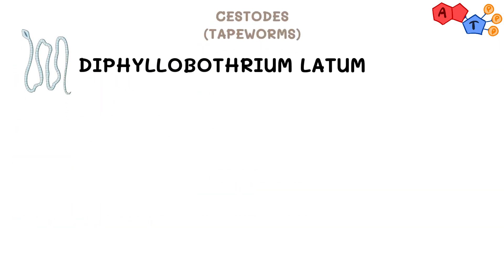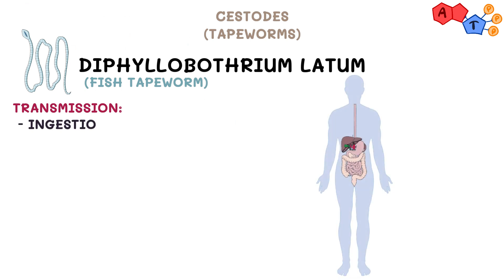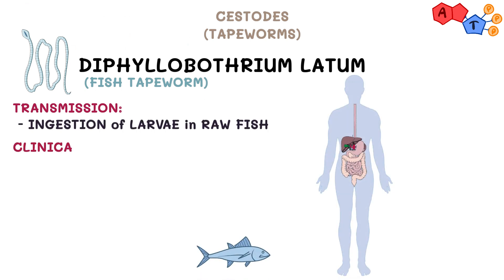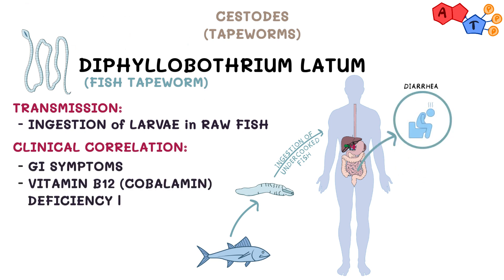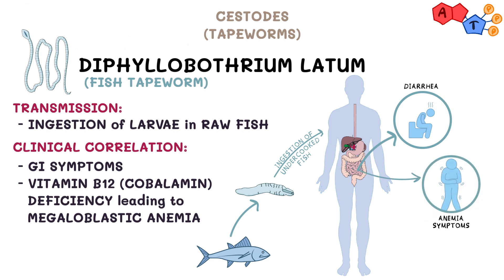The next worm on the list is Diphyllobothrium latum. It is also called the fish tapeworm, and it's the largest tapeworm. Upon ingestion of larvae in raw freshwater fish, it resides in the GI tract causing GI symptoms such as diarrhea. It can also cause vitamin B12 (cobalamin) deficiency, leading to megaloblastic anemia. As for treatment, we also use praziquantel. So even though it's the largest tapeworm, there is relatively little to know about it.